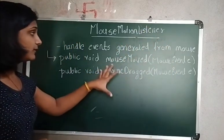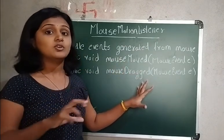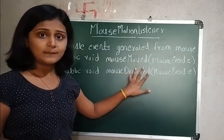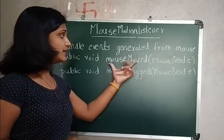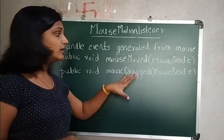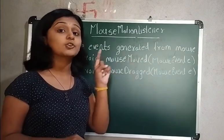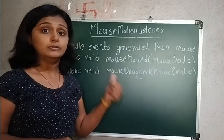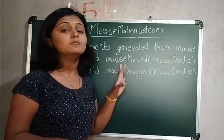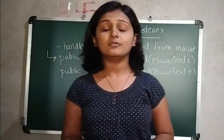Whatever content you want to execute whenever you move the mouse should be added inside the method body. If you want to use only one method, then the other method should be overridden as per the rules. So this was regarding the MouseMotionListener.